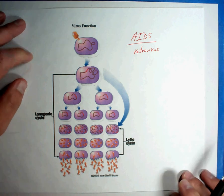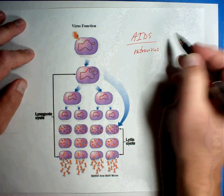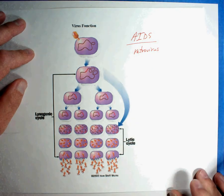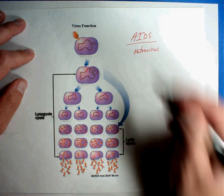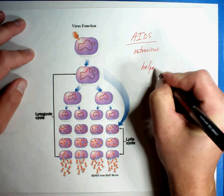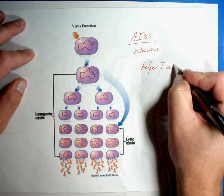Retroviruses are a little different. Now there are other retroviruses. Things like the common cold is a retrovirus as well. But let's talk about the AIDS virus for a second. The AIDS virus affects what are called helper T cells in the body.